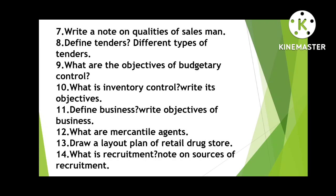Write a note on qualities of a salesman. Define tenders and types of tenders. What are the objectives of budgetary control? — that is question nine. Then: What is inventory control? Write its objectives. Define business and write objectives of business. What are mercantile agents? Draw a layout plan of a retail drugstore.